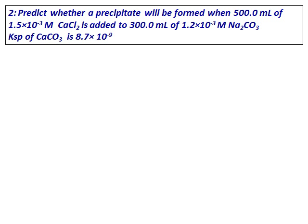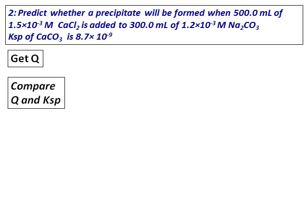Predict whether a precipitate will be formed when 500 mL of 1.5×10⁻³ molar calcium chloride is added to 300 mL of 1.2×10⁻³ molar sodium carbonate. The Ksp of calcium carbonate is given. In order to predict any precipitation, you need to calculate the value of Q. Once you get the value of Q, compare it with Ksp.